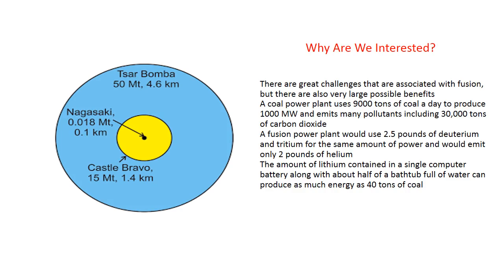A coal power plant uses 9,000 tons of coal per day to produce 1,000 MW and emits 30,000 tons of CO₂. A fusion power plant would use only 2.5 pounds of deuterium and tritium for the same power output and emit only 2 pounds of helium. The lithium in a single computer battery, plus about half a bathtub of water, can produce as much energy as 40 tons of coal.